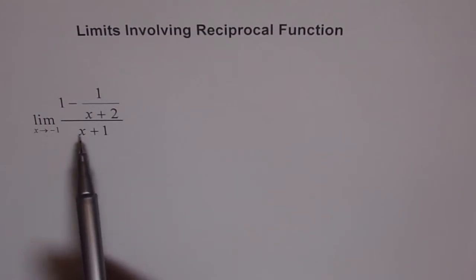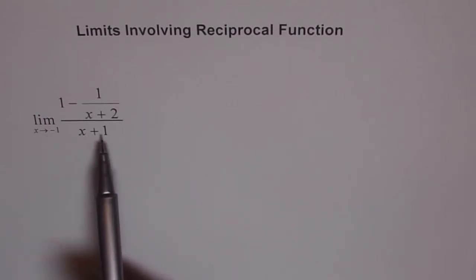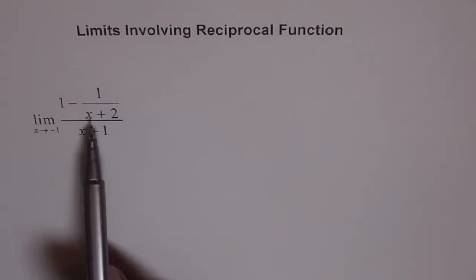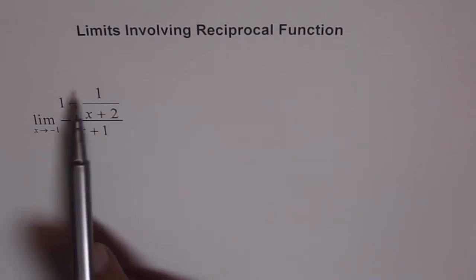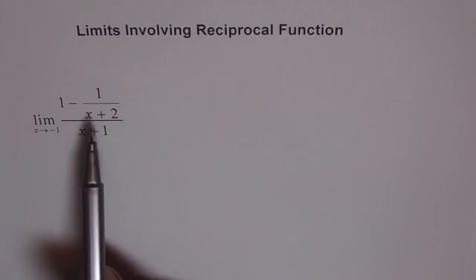So if we plug in minus 1 here, we get 0 in the denominator. And if we plug in here, we get minus 1 plus 2 is 1 and 1 minus 1 is 0. So we get 0 over 0.